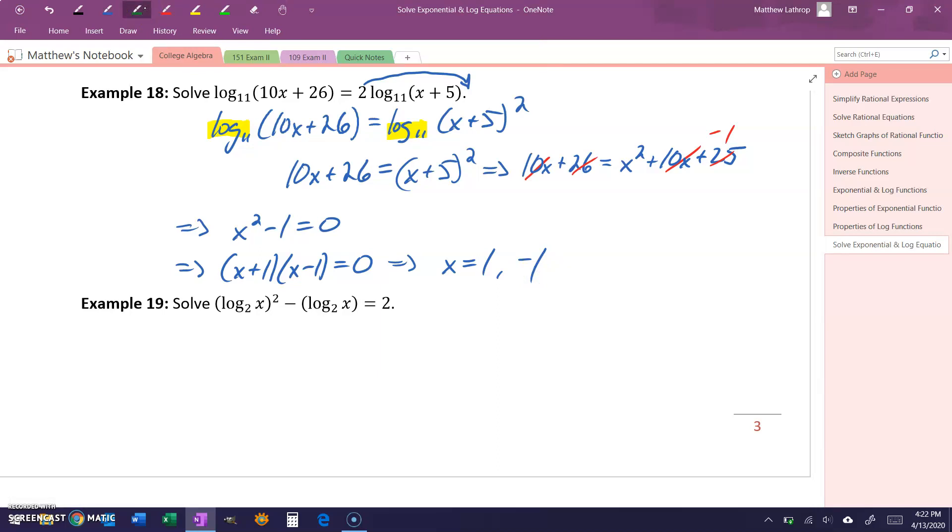Those fit within our domain restrictions, which would be that x has to be greater than negative 5, and x has to be greater than negative 26 over 10. So we have, in this case, two valid solutions to that given log equation.